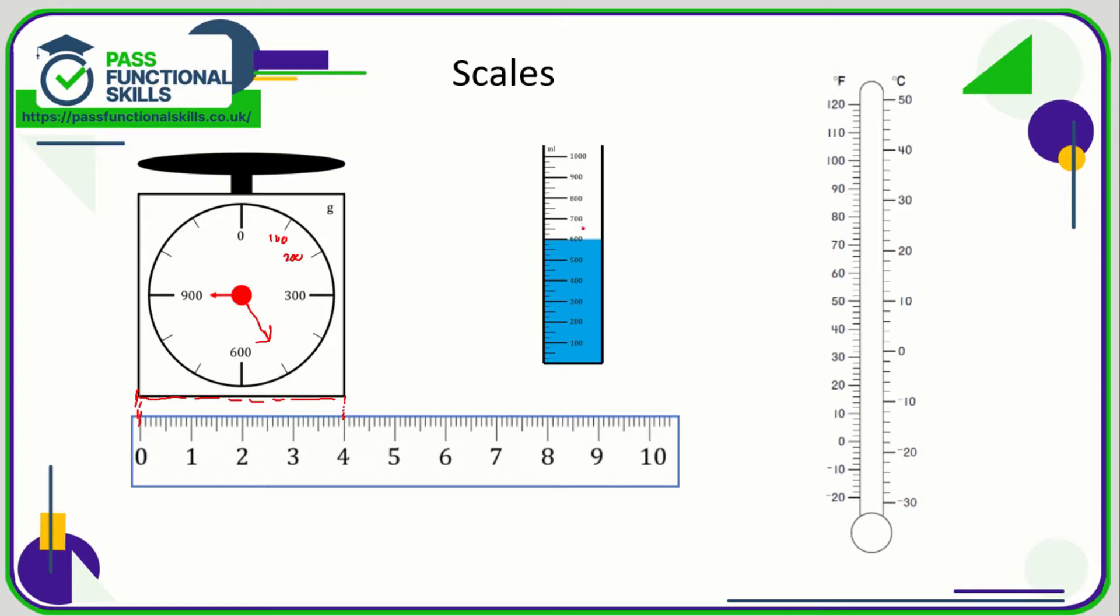For measuring the capacity of a liquid, again it's just a question of reading and seeing where the liquid comes up to. Here that would be 600 milliliters. If it came up to this mark here, we just need to be careful with the scale.